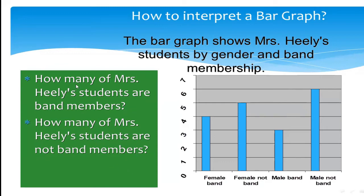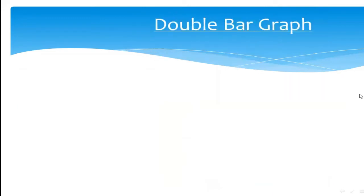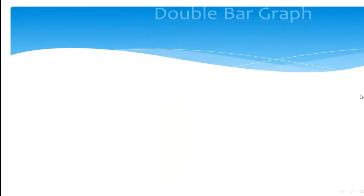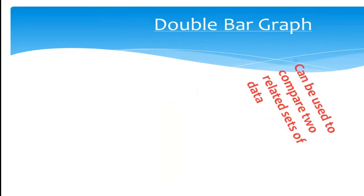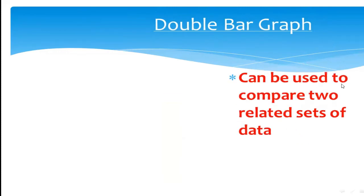If they ask how many students are female and in the band, you take only the female band part — that is 4. This is the way we compare using a bar graph. Now let's learn about double bar graph. The word 'double' itself means two, so a double bar graph can be used to compare two related sets of data.